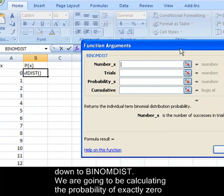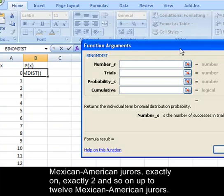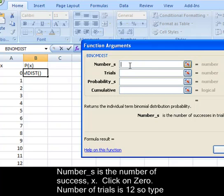We are going to be calculating the probability of exactly zero Mexican-American jurors, exactly one, exactly two, and so on, up to exactly twelve Mexican-American jurors. Number_s is the number of successes, click on zero.